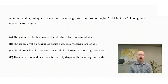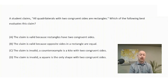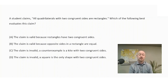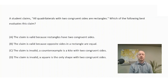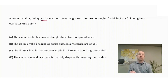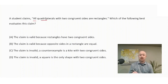A student claims all quadrilaterals with two congruent sides are rectangles. Which of the following best evaluates this claim? A, the claim is valid because rectangles have two congruent sides. B, the claim is valid because opposite sides in a rectangle are equal. C, the claim is invalid — a counterexample is a kite with two congruent sides. D, the claim is invalid — a square is the only shape with two congruent sides. Since the claim says 'all quadrilaterals,' we need a counterexample of a non-rectangle quadrilateral with two congruent sides to invalidate it.